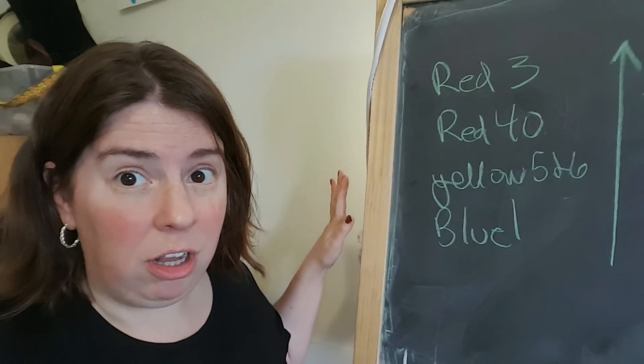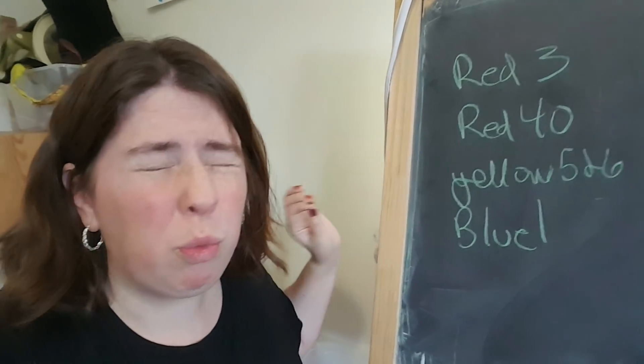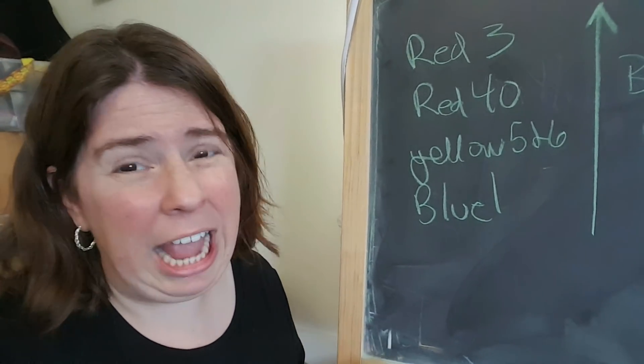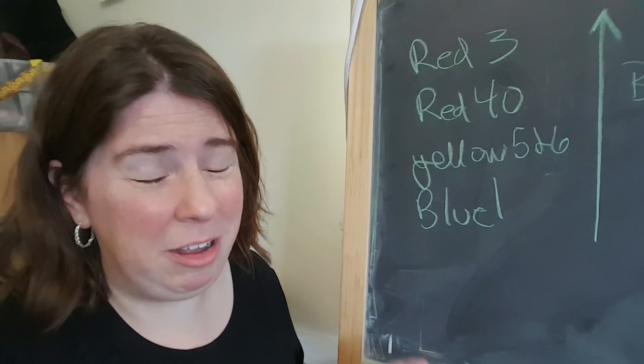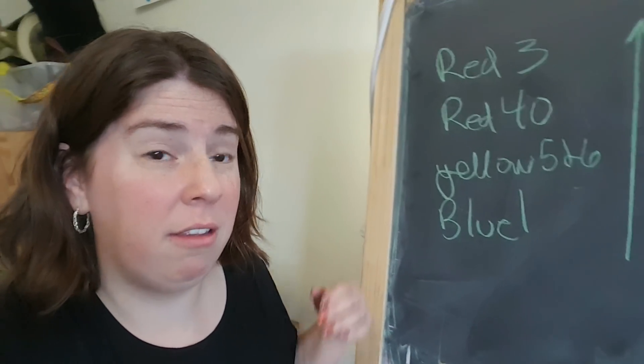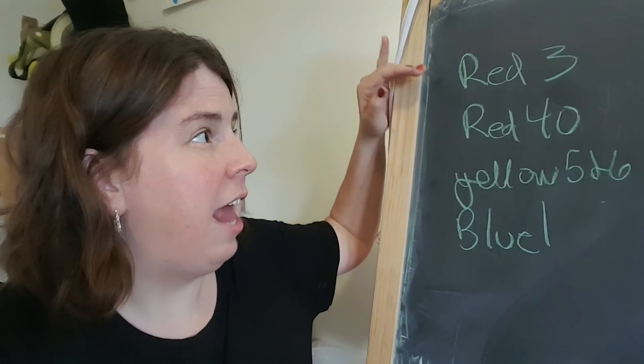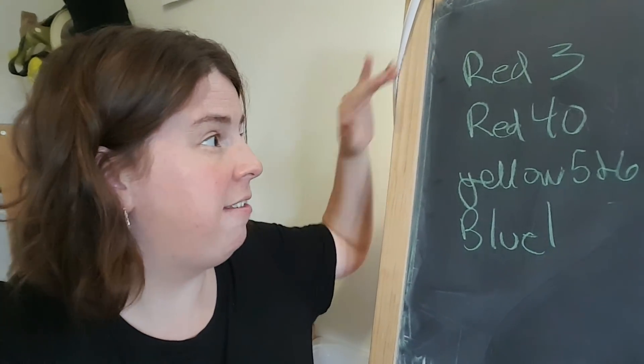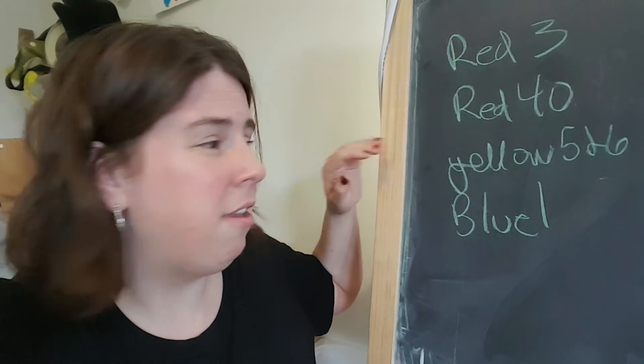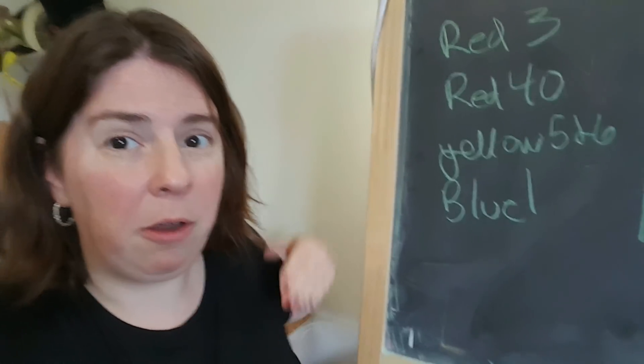In general, Red number 3 strikes really, really fast. I found that I don't need really a lot of acid at all or even very much heat for it to bind to especially superwash yarns. I find that after Red number 3 being the fastest, next we see Red 40, then I'm a little unsure on the order of the yellows, and then finally the blue.